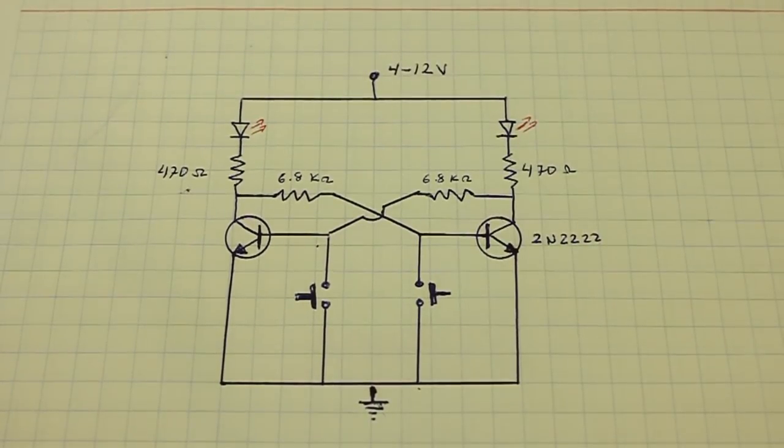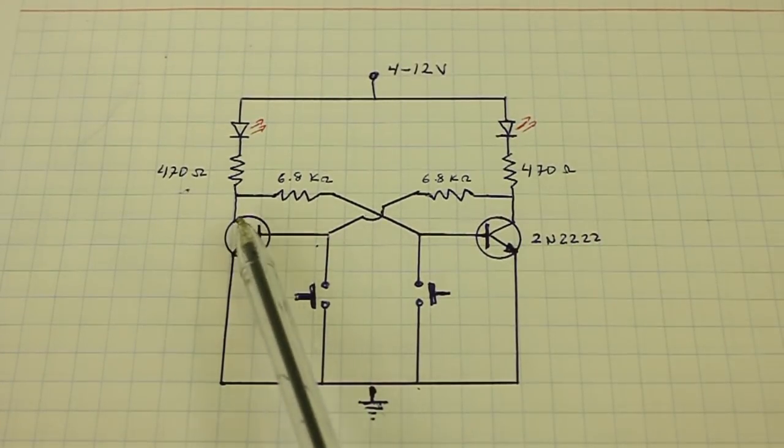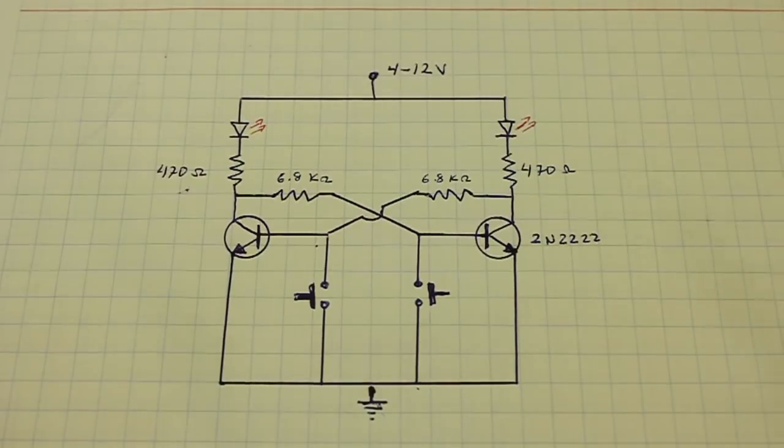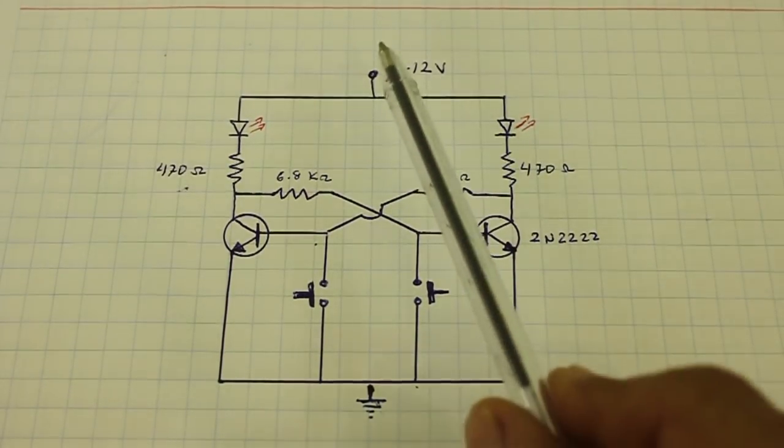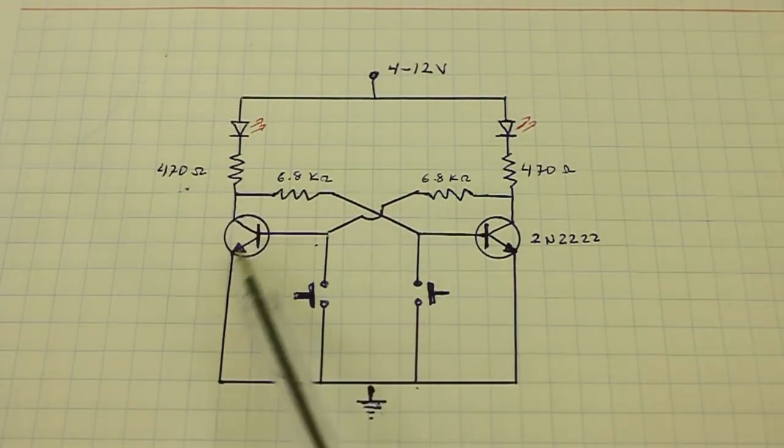Suppose that this transistor is on. It is in the state of conduction. The current flows through this path and the LED is on.